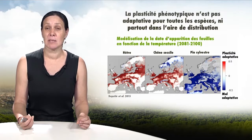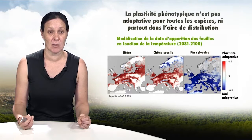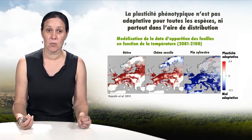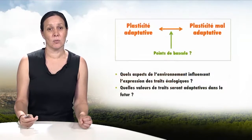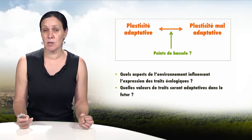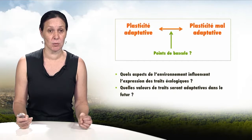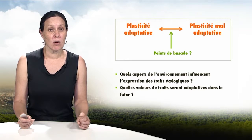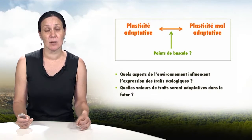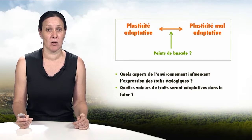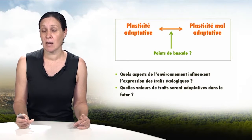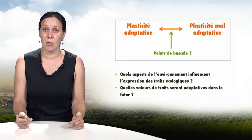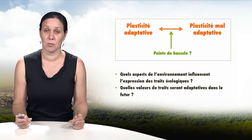For beech and oak, phenotypic plasticity allows adaptation to future climate change and improves their fate except in the colder areas. On the contrary, for the pine, the change in temperature compromises its adaptation except in the coldest areas. So we can see that phenotypic plasticity may be adaptive in current environmental conditions and can become maladaptive in future conditions. Understanding where, how and for what species phenotypic plasticity becomes insufficient to adapt and aggravates the fate of the species is a major challenge, requiring us to better understand what affects the expression of traits in individuals and which traits will be adaptive in future.